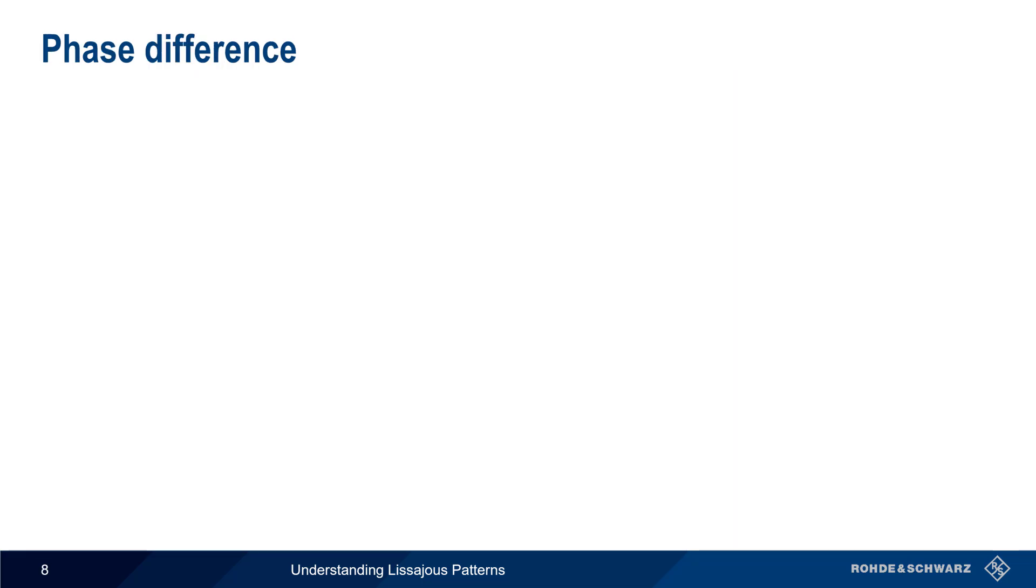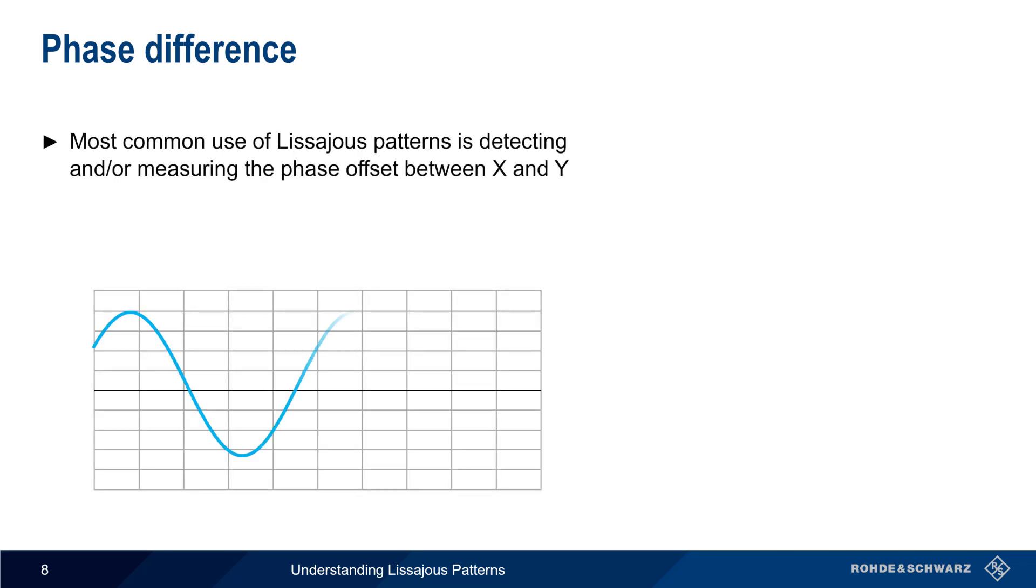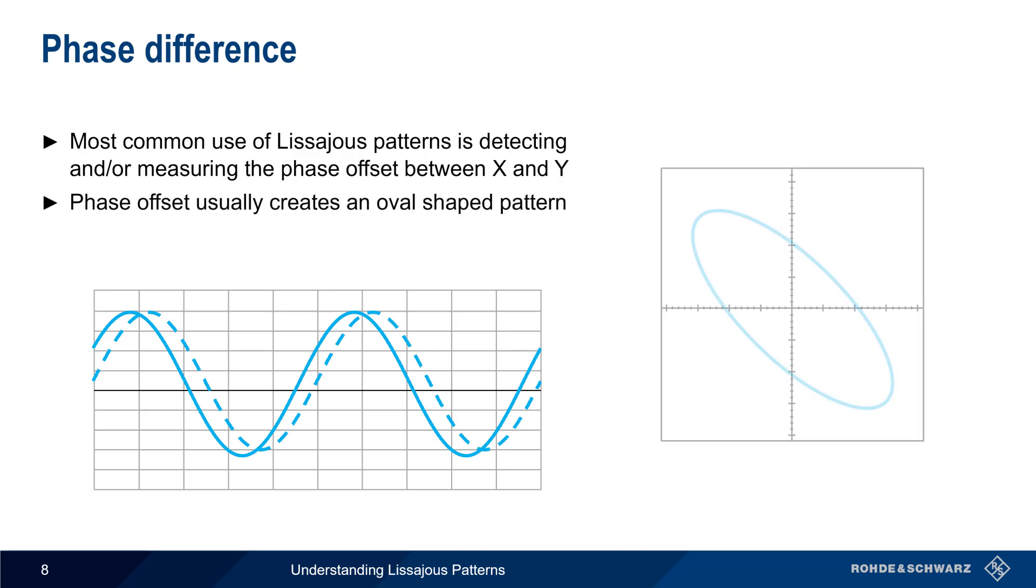Now we'll move on to the effect of a phase difference between the two channels. Detecting and or measuring the phase difference, or offset, between X and Y is the most common application of Lissajous patterns. In most cases, this phase offset will create an oval-shaped pattern, as can be seen by plotting pairs of X and Y values. The width of the oval is a function of the amount of phase shift between the channels.